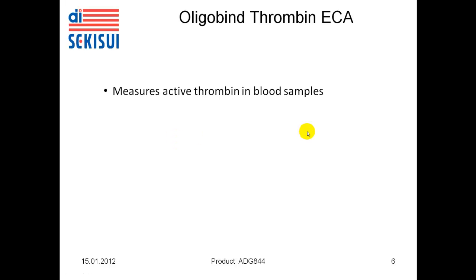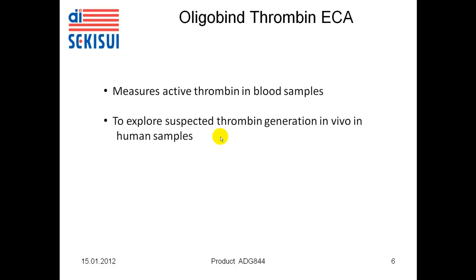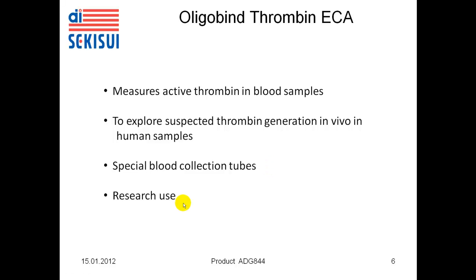Taken together, the Oligobind Thrombin assay measures active thrombin in blood samples. It allows exploration of suspected thrombin generation in vivo in human samples. Special blood collection tubes are needed to stabilize the thrombin in a given sample, and these blood collection tubes are available from American Diagnostica GmbH as well. Currently, the assay is for research use only.